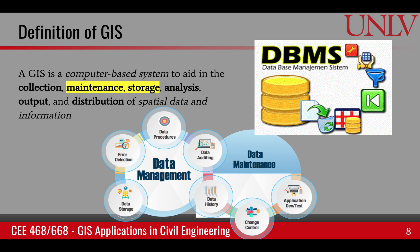Another key word is maintenance and storage. When data is in a computer it must be properly maintained, which includes correcting for any errors, performing necessary procedures, data auditing, and keeping track of changes in the data that may happen over time. All of this is handled by what we call a database management system — a computer program that helps users interact with the data.